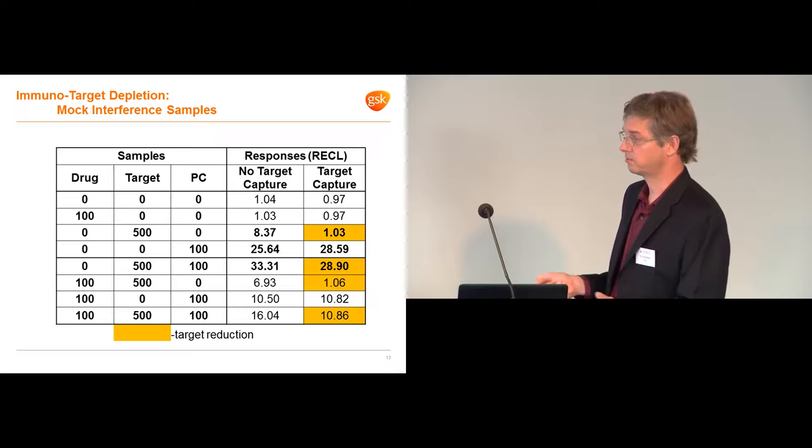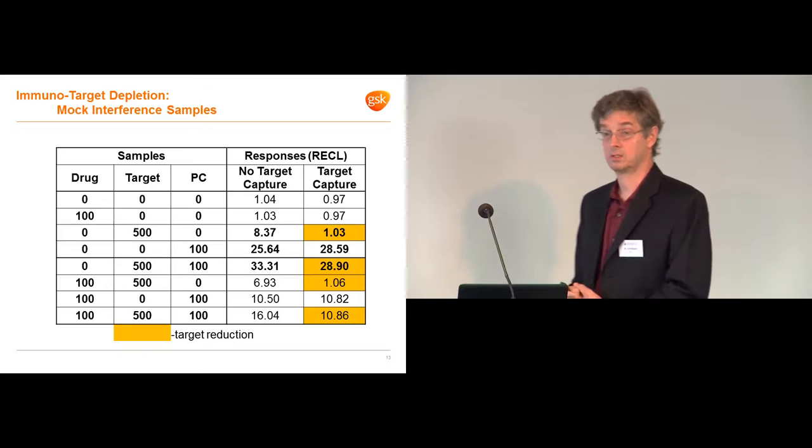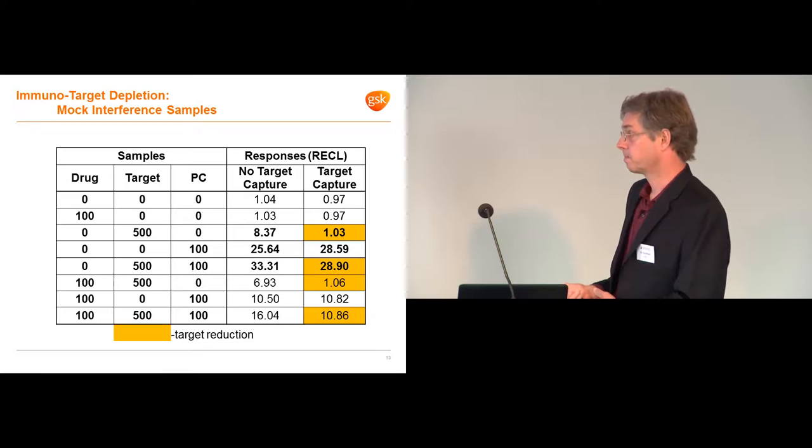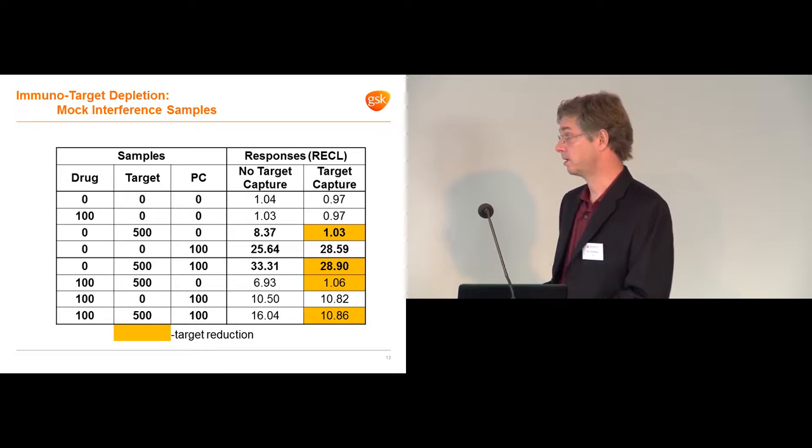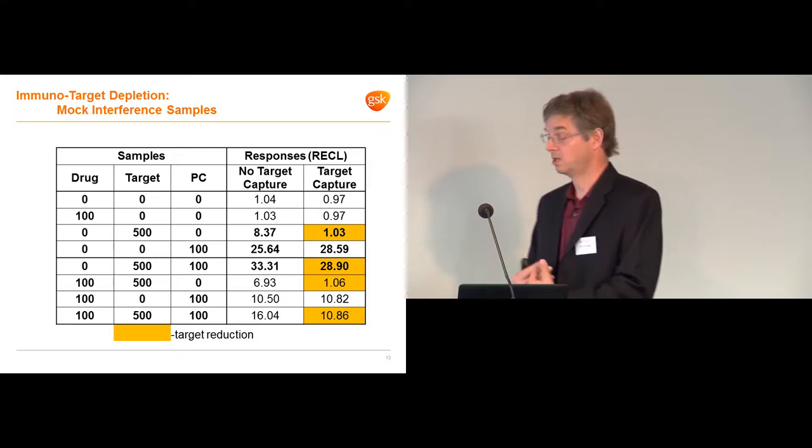When drug's on board, the drug's going to bind the target, so you're going to get a slightly lower assay response. But when you do the immunotarget depletion, it basically goes back down to background, which is also the goal. And then the final combination, positive control will bind the drug, so you're going to get a lower response due to the positive control. And then similarly, when you add the target, it's going to be a little less, but it then gets depleted. The target gets depleted, and you can detect all of your initial positive control.